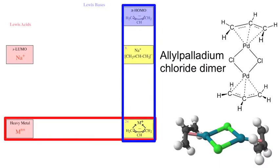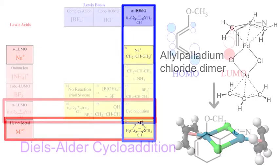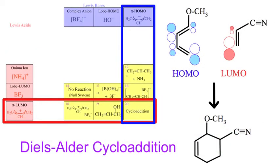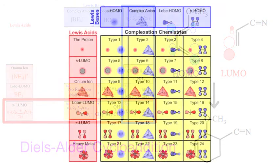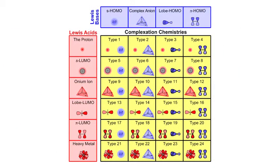If we look at the interaction of heavy metal Lewis acids with Pi Homo Lewis bases, for example palladium and the allyl cation, we see Pi organometallic complexes such as the allyl palladium chloride dimer. And if we look at the interaction of Pi Lumo Lewis acids with Pi Homo Lewis bases, we get classic Diels-Alder type cycloaddition chemistry. Indeed, we can go through all of the complexation chemistries from 1 to 24. We will be doing this in the next video.